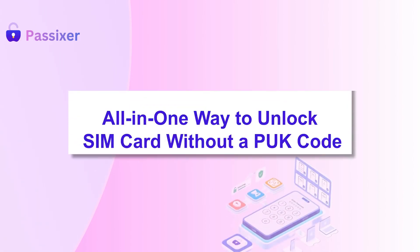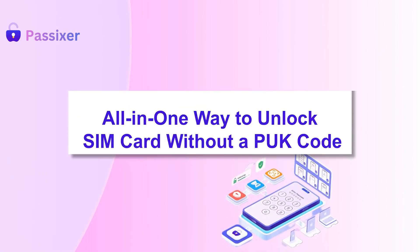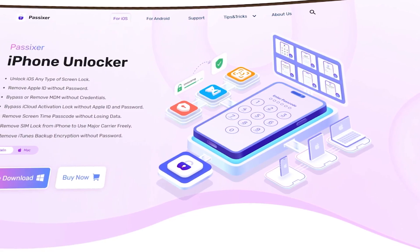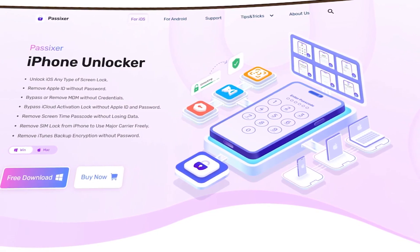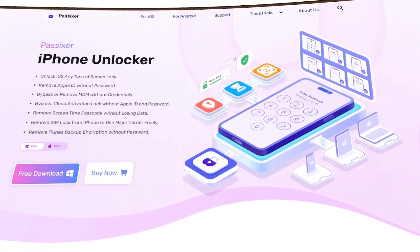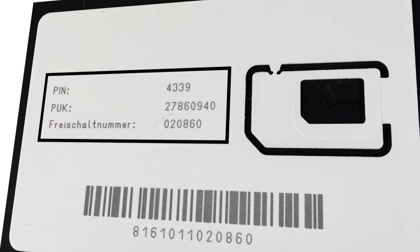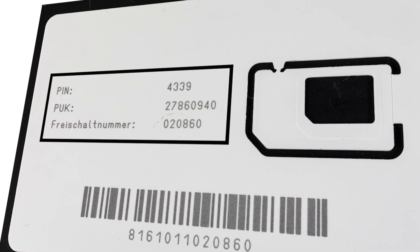Method 3: All-in-one way to unlock your SIM card without a PUK code. If the first two methods don't work, try PASIXR iPhone Unlocker — an all-in-one tool that can remove SIM locks, activation lock, Apple ID, screen time passcodes, and more. Even without your PIN or PUK code, it can unlock your SIM quickly and safely.